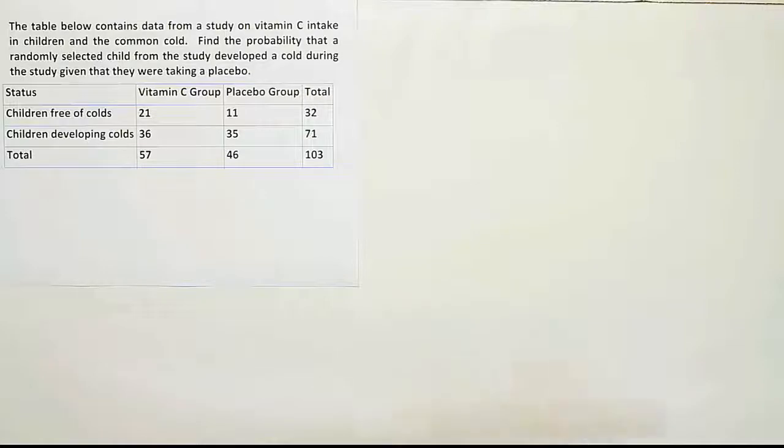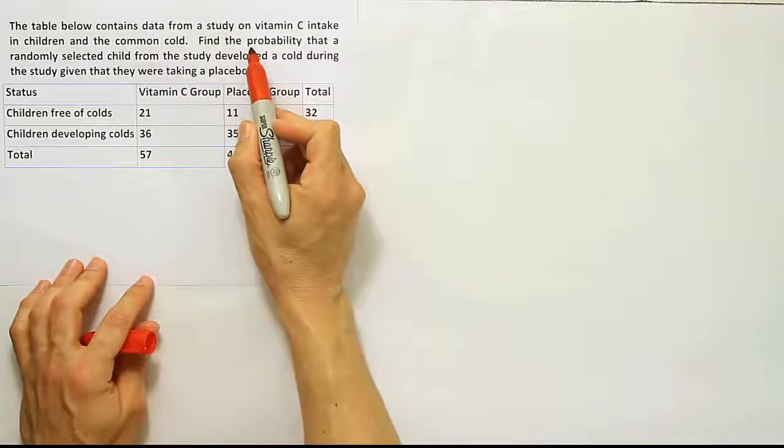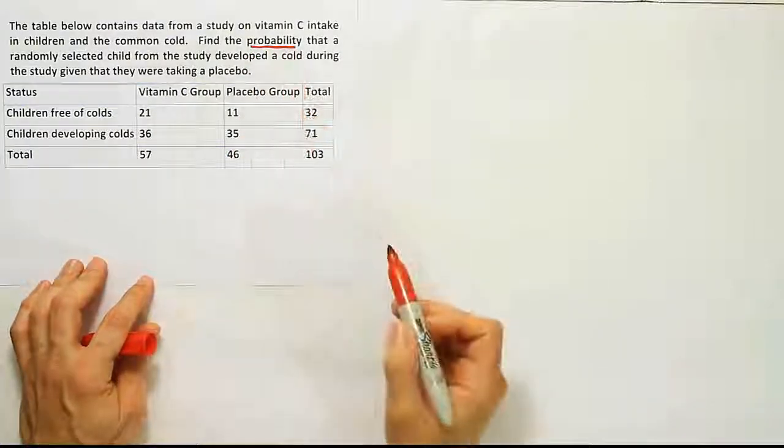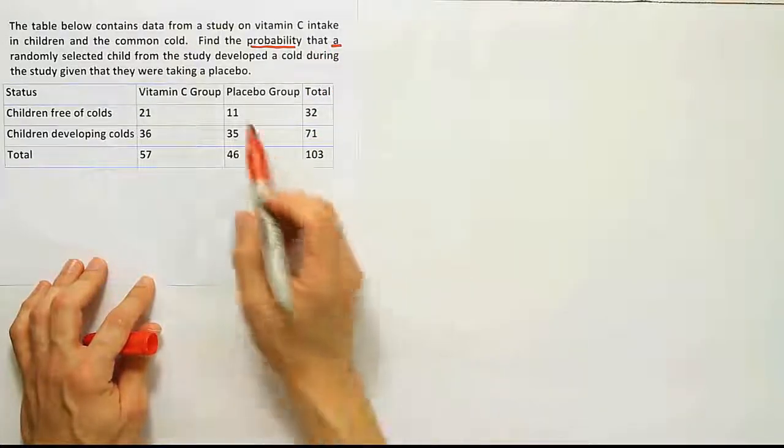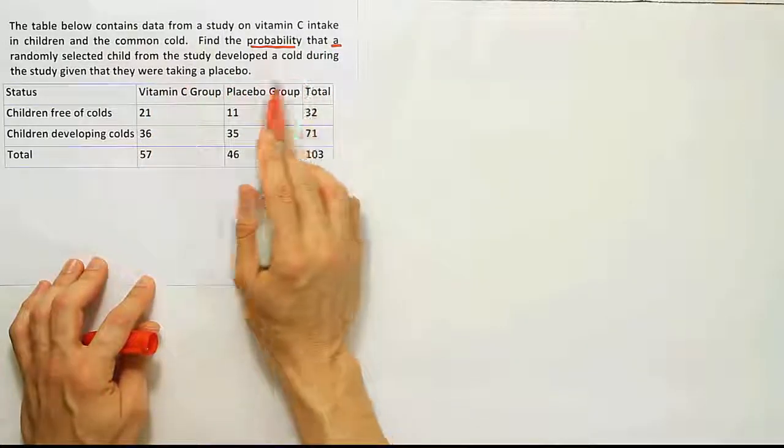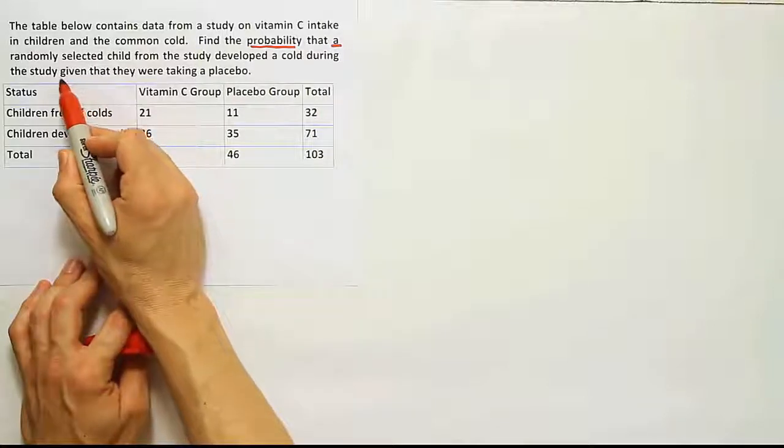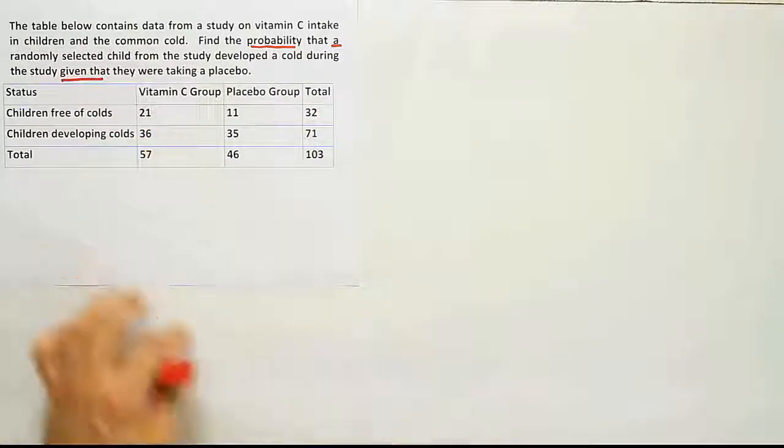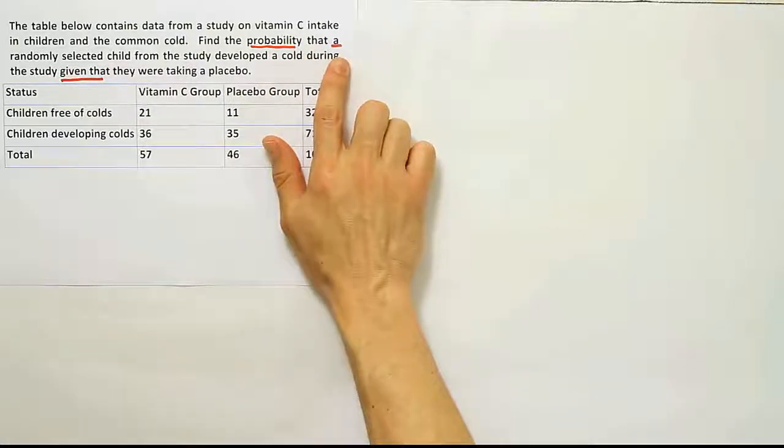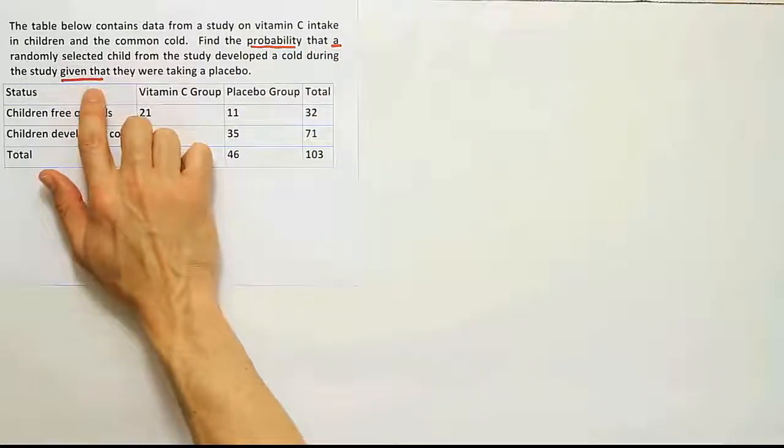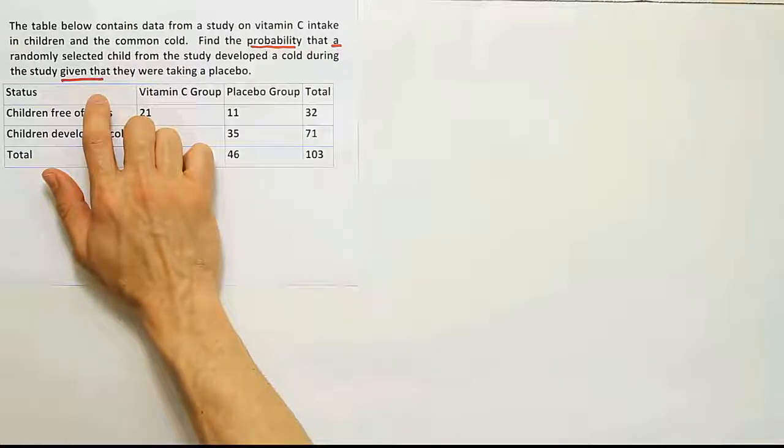Alright, so look at key words for this problem. It says find the probability, so we know we're doing a probability problem, that a randomly selected child, so just one child, from the study developed a cold during the study given that they were taking a placebo. So it's a probability question, we're selecting just one subject and we have the phrase given that. Those three things put together tell us that this is probably conditional probability.